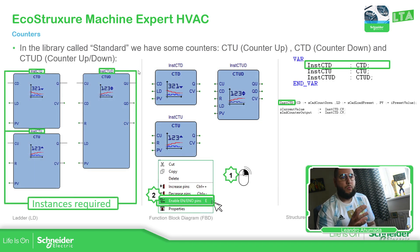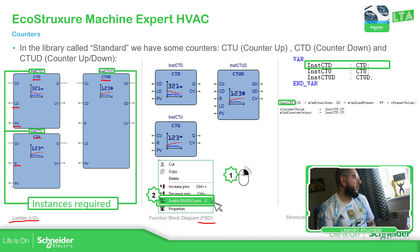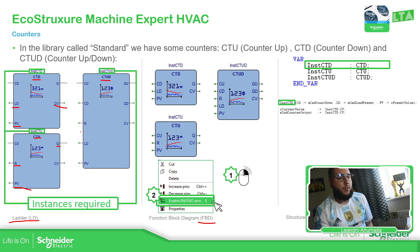If we drag and drop it, it will work for the ladder and for the FBD language. For the structure types, these counters need an instance, so before using them we need to create the instance in order to use the function block. Once you drag it, you have counter down, counter up, and counter up and down. You have load and preset value, reset and preset value, and then the output when it reaches the value, plus the counter value. If you want enable input and output, just right-click the block and you can add them.